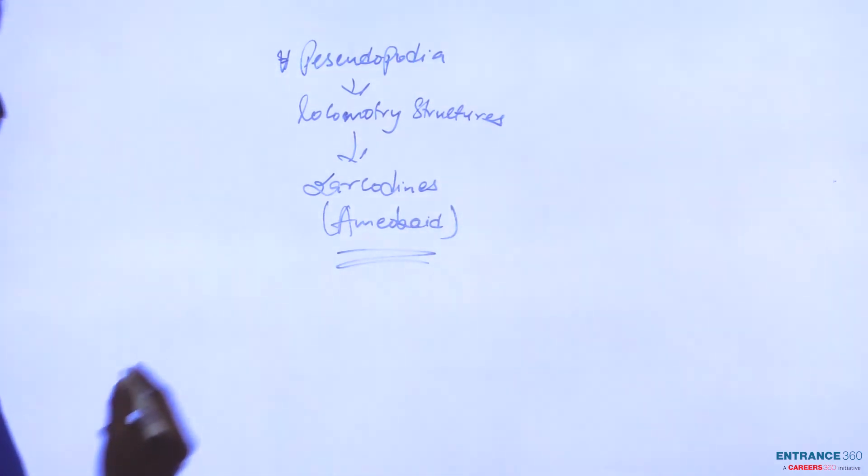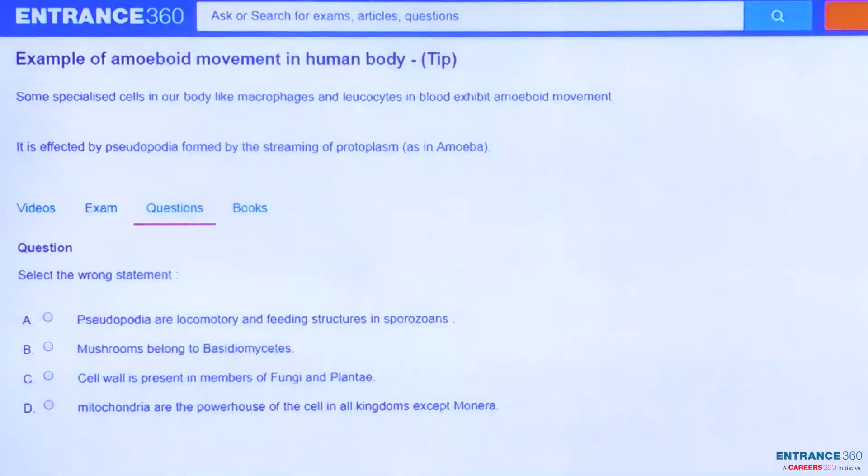As we have understood the concept, now we will look for the correct option. As discussed in the solution, pseudopodia are locomotory and feeding structures in sporozoans. So option A is correct.